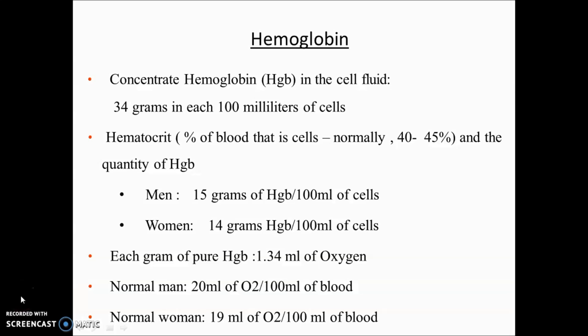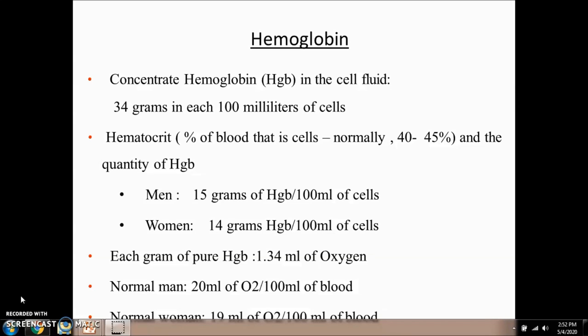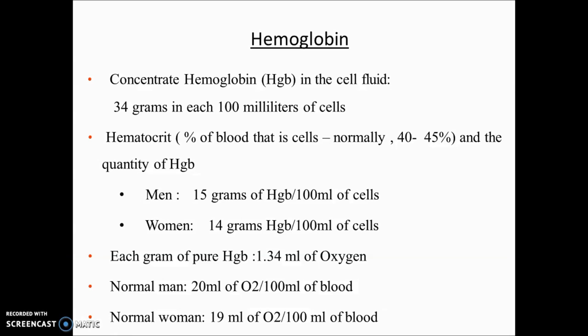Now let's focus on hemoglobin. Normal hemoglobin in men is around 14–17 g% and in women 12–14 g% (Ganong values). Concentrated hemoglobin is around 34 g%. One gram of hemoglobin carries 1.34 ml of oxygen. In 100 ml of blood, men contain 20 ml of oxygen and women contain 19 ml.